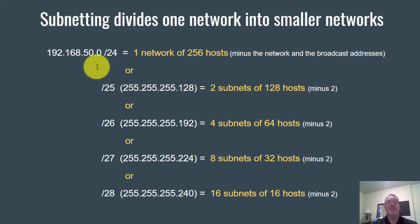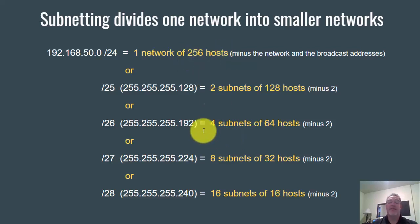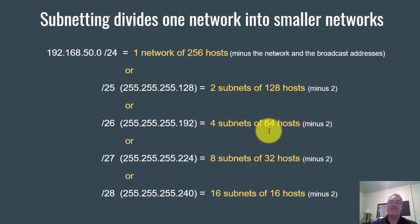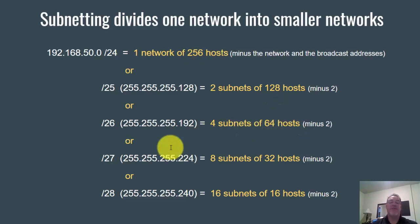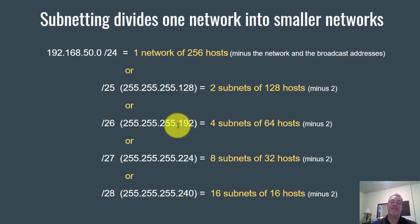Or you could take this one network of 256 hosts and create four networks out of it — four subnets of 64 hosts each. Four times 64 is 256. To do that, each subnet will have /26 as its subnet mask, or 255.255.255.192.